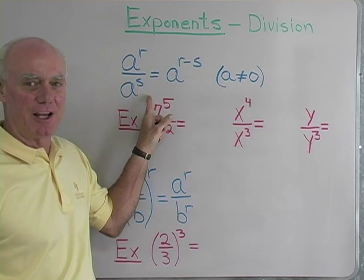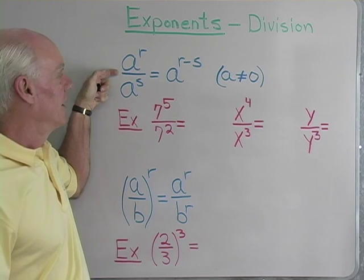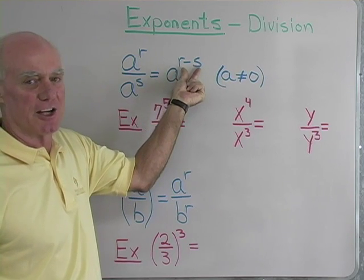a to the r divided by a to the s. When I have the same base with division, I can write the result as a to the r minus s.